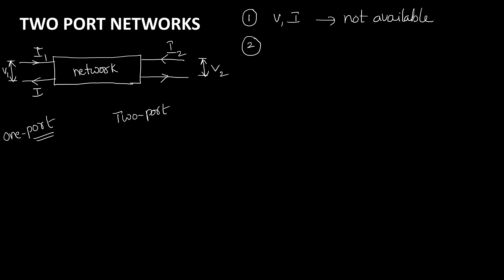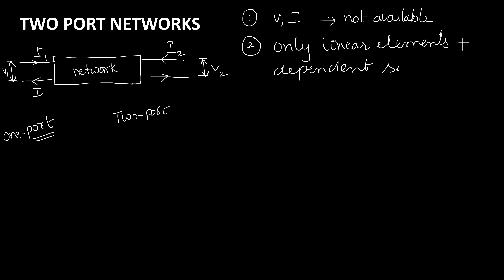The second assumption is that this network will consist of only linear elements, or linear elements along with dependent sources. The third assumption is that if we have inductors and capacitors, we have to assume that the initial conditions are zero.